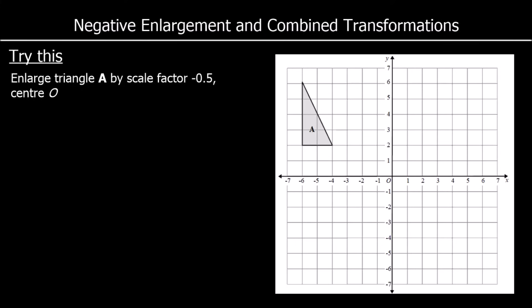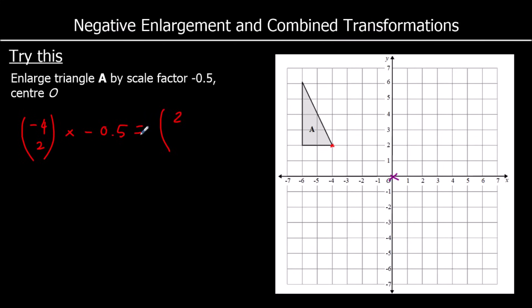And one more of these — this time we're enlarging by a scale factor of minus 1.5, centre at the origin again. So let's pick any corner. To get there from the centre of enlargement at the moment is back 4, up 2 — so the vector is (-4, 2). I'm going to multiply that by minus 1.5. A negative times a negative is a positive: 1.5 times 4 is 6, but half of 4 is 2 right. And negative times positive is negative: half of 2 is 1. So it's going to be right 2, down 1.